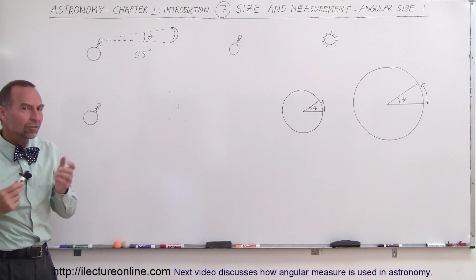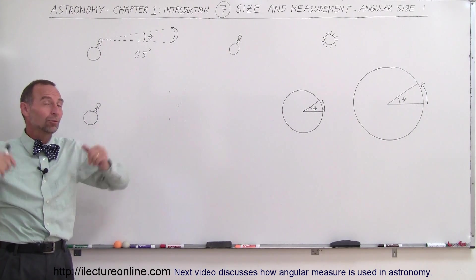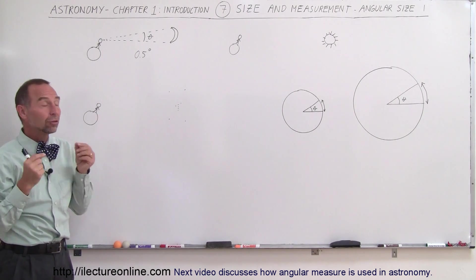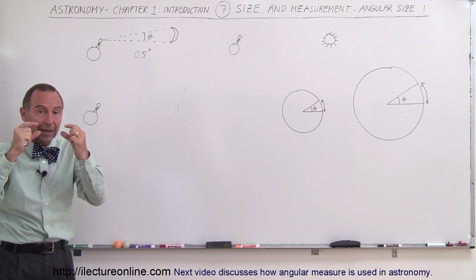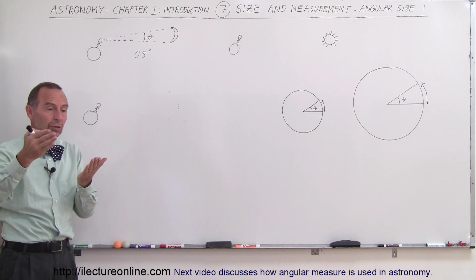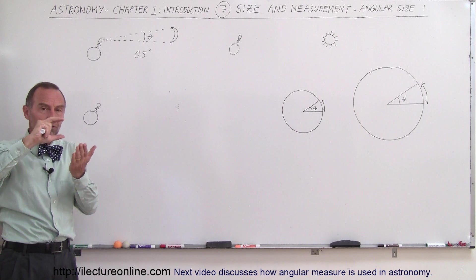Now how big is the Sun? Well we know the Sun is much, much bigger than the moon, but since the Sun is also much farther away than the moon, it turns out in the sky they look about the same size. That's why when there's a solar eclipse, the moon travels in front of the Sun.